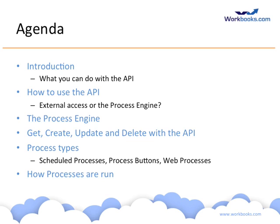We'll talk about the types of processes you can run inside the Process Engine. These include scheduled processes that run from time to time, process buttons that you can attach to a form in Workbooks, and web processes, where you can show a web form and react to the input on that form. Finally, I'll talk about how processes are run in the Process Engine and some of the constraints they run under.